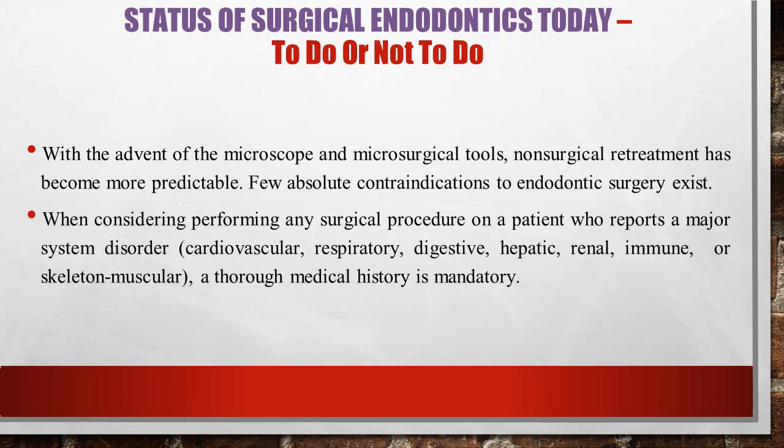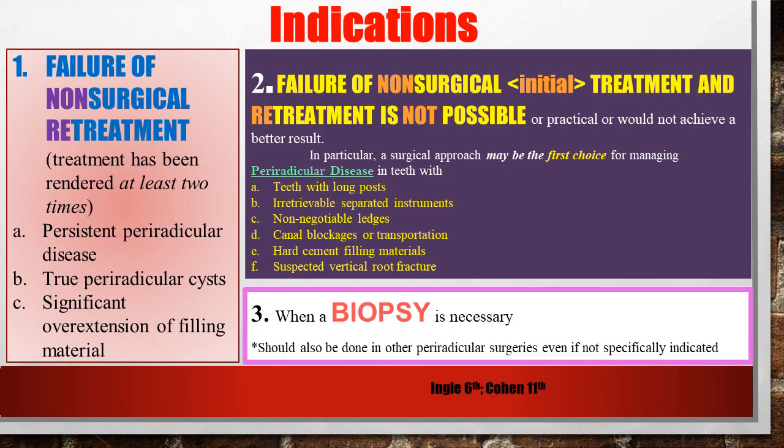With the advent of the microscope and microsurgical tools, magnification has improved manifold. You have clearer access, and because of smaller size instruments you are able to work more efficiently, because of which the prognosis and outcome of treatment have become much better. The chances for a case to be considered for surgery are quite fewer now. However, if you are going to consider a surgical procedure, you have to check whether the patient's systems — cardiovascular, respiratory, and so forth — are going to permit it. A detailed medical history prior to surgery is very important.